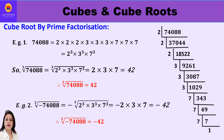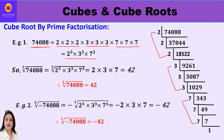Now let us study how to find the cube root of a given number by prime factorization method. Let us take the number 74088 and find its cube root by prime factorization. First we find all the prime factors, and we get 2 × 2 × 2, then 3 × 3 × 3, and 7 × 7 × 7. We can form triplets of 2, 3, and 7, so 74088 equals 2 cube × 3 cube × 7 cube. Therefore, the cube root of 74088 is the cube root of 2 cube × 3 cube × 7 cube.